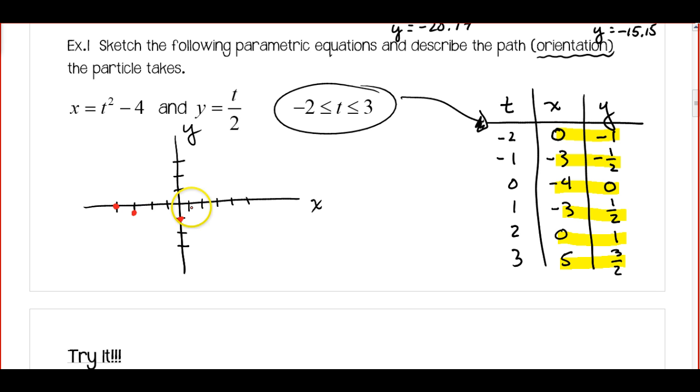And negative 3, positive 1 half. So now I'm over here. And then, 0, 1 over to here. And 1, 2, 3, 4, 5. And 1 and a half. So right about here.